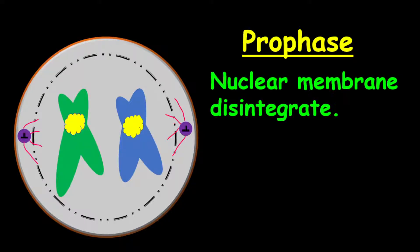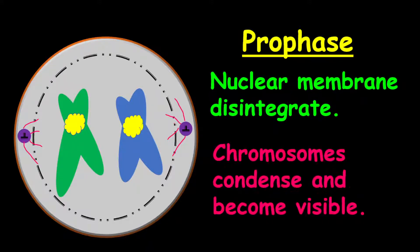At the prophase, the nuclear membrane will disintegrate. The chromosomes will condense and become visible. Also, the centrosomes will move to opposite sides of the cell. The spindle fibers will form. You will also see the centriole in the centrosomes.